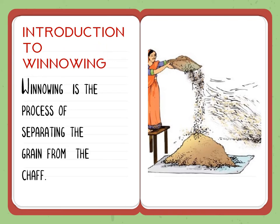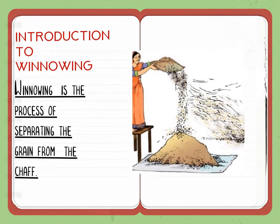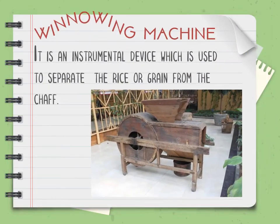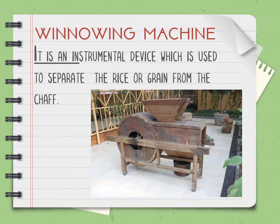The definition of winnowing is: winnowing is the process of separating the grains from the chaff. The threshed grain is placed on a tray and is allowed to fall from a height.